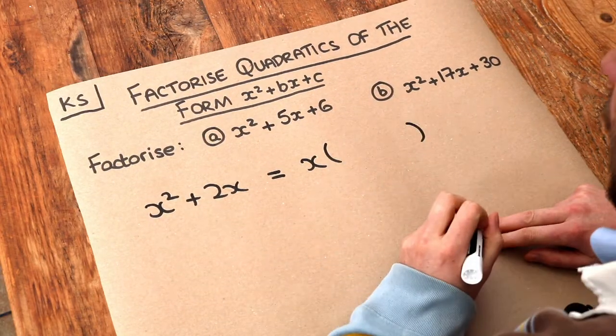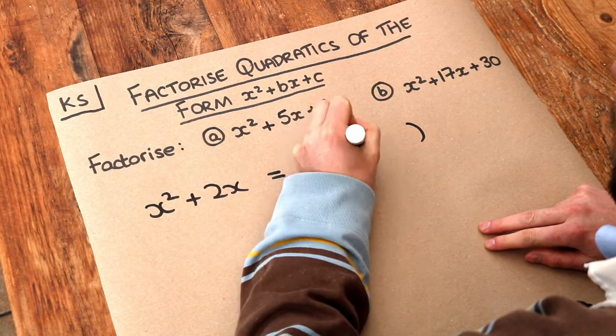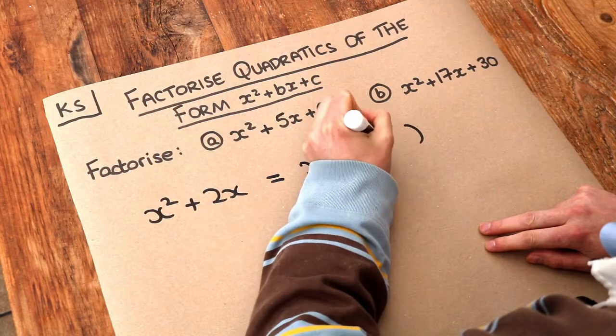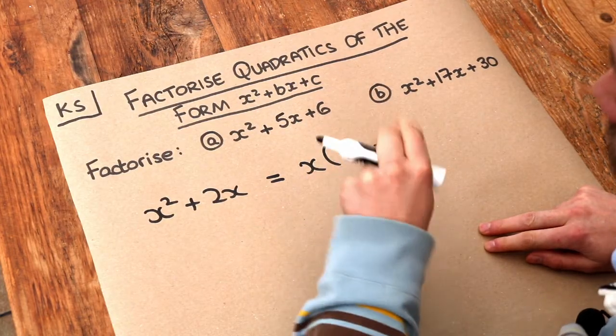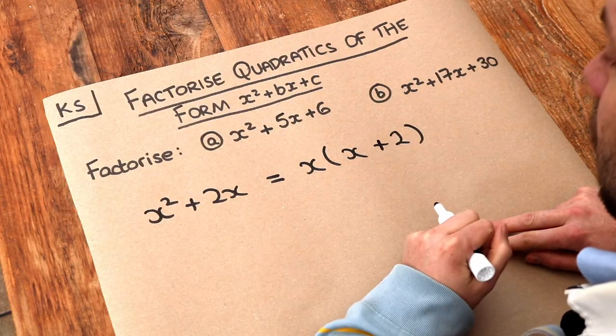Open up a bracket and then think well x times what is x squared? Well it's x. And x times what is plus 2x? Well it's plus 2. And if you don't know how to do that please see my video on factorising out a common term first.